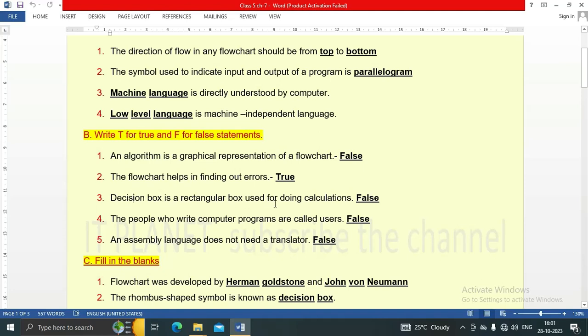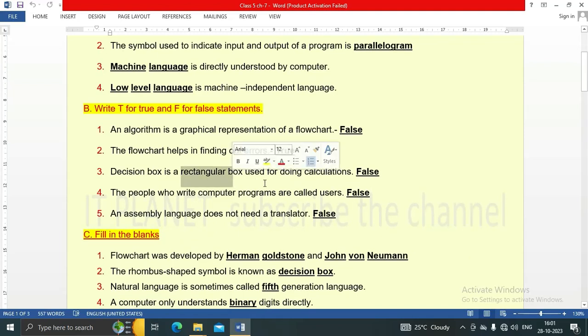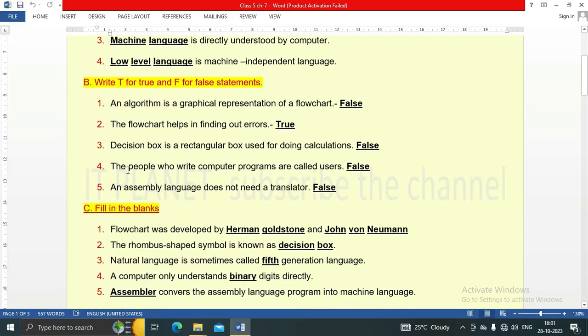Decision box is a rectangular box used for doing calculations. This statement is false. Decision box is not rectangular box. The people who write computer programs are called users. This is also false. The people who write computer programs are called programmers.